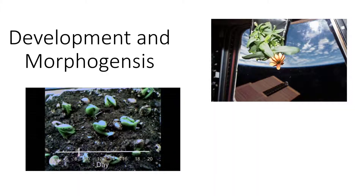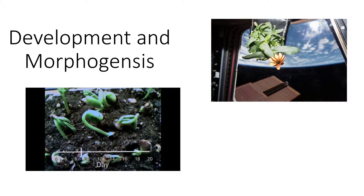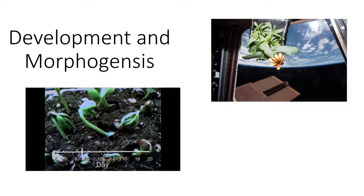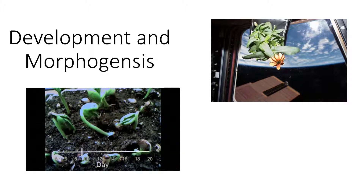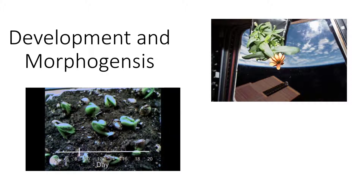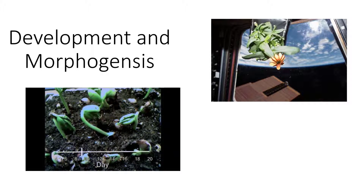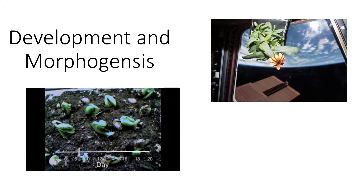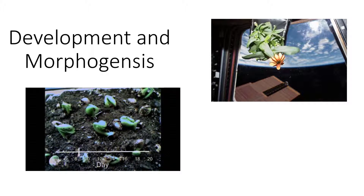All organisms begin life as a spherical, fertilized egg, with differences in genes, gene expression, growth, and morphogenesis producing all the different types of individuals. During growth and development, various parts of the plant send chemical messages to other parts, such that development is coordinated.